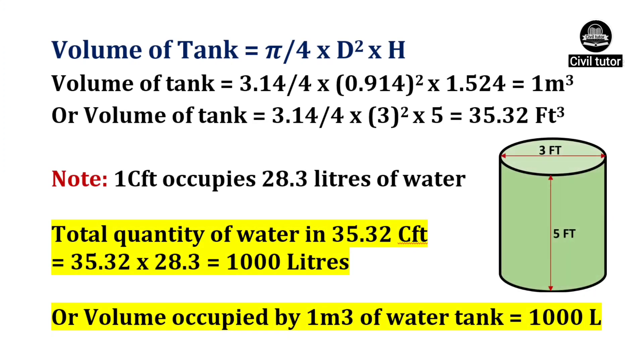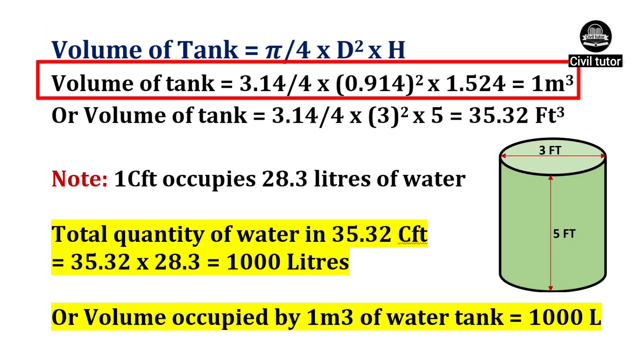Volume of circular tank is given by pi by 4 d square into h, in which h is the height of circular tank and d is its diameter. On substituting these values, the volume of tank will be equal to 1 meter cube or 35.32 cubic feet.